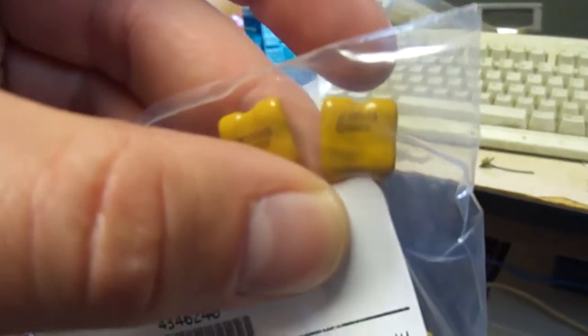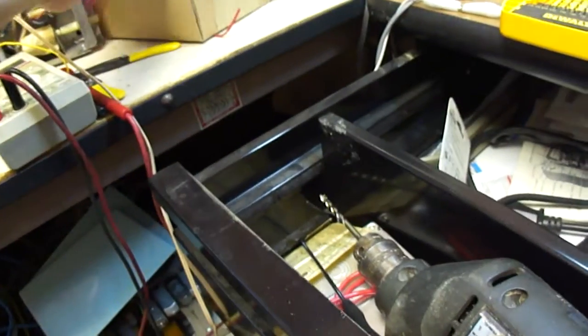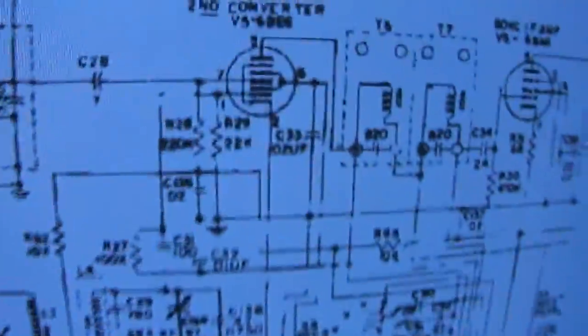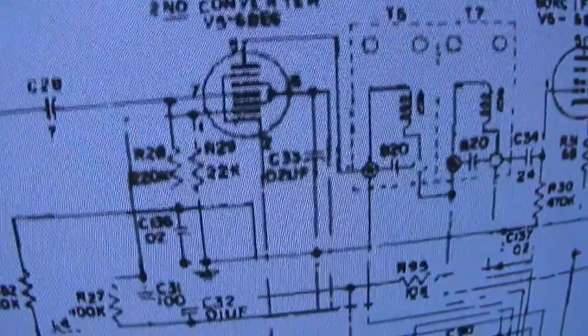I got these caps from Mauser. They're 330 pF of 1000 volts. I also got some 820 pF caps for the 60 kHz IF stages.